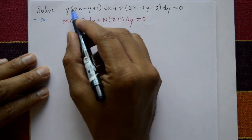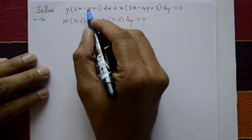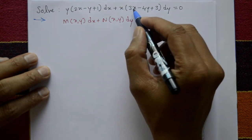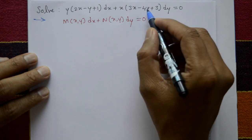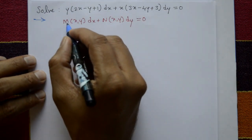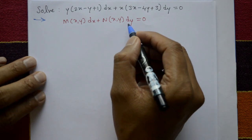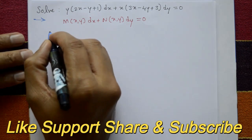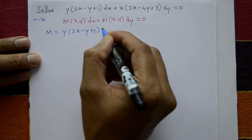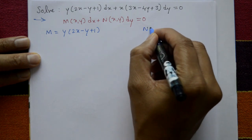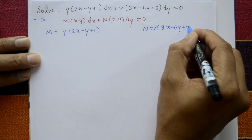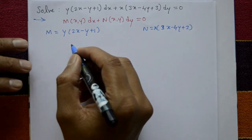Solve: y(2x - y + 1)dx + x(3x - 4y + 3)dy = 0. The given equation is in the form M(x,y)dx + N(x,y)dy = 0, where M = y(2x - y + 1) and N = x(3x - 4y + 3). Find the general solution.